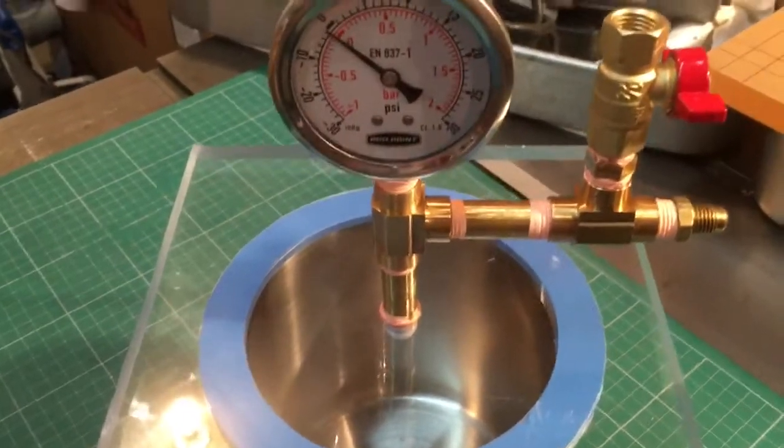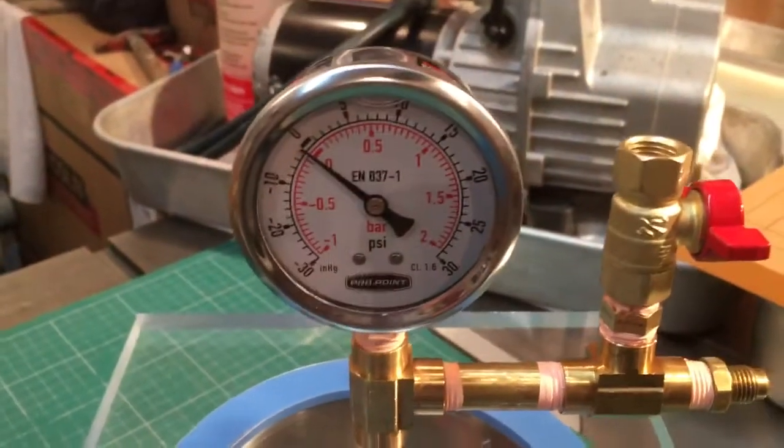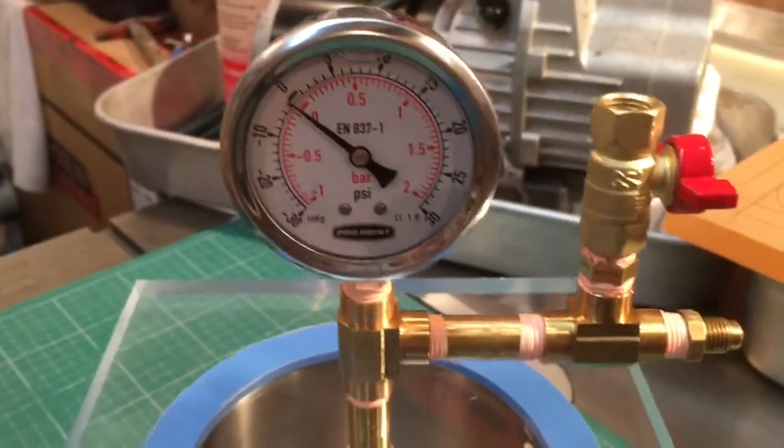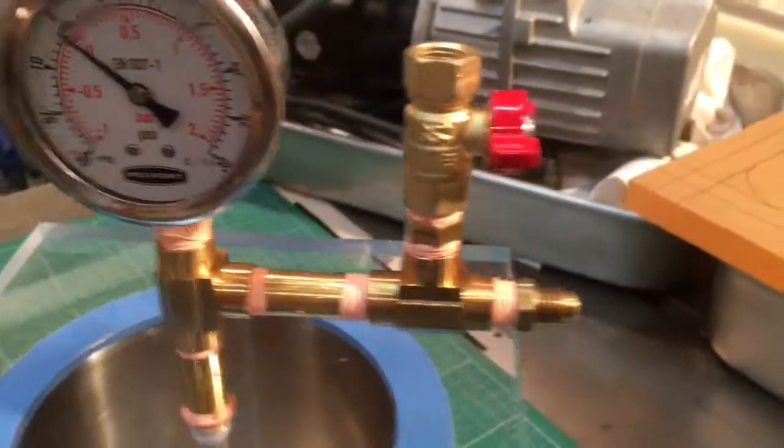I drilled and tapped a quarter inch hole into it, inserted some brass fittings, got a vacuum gauge going and a bleed valve to release the vacuum inside the chamber when I'm done.